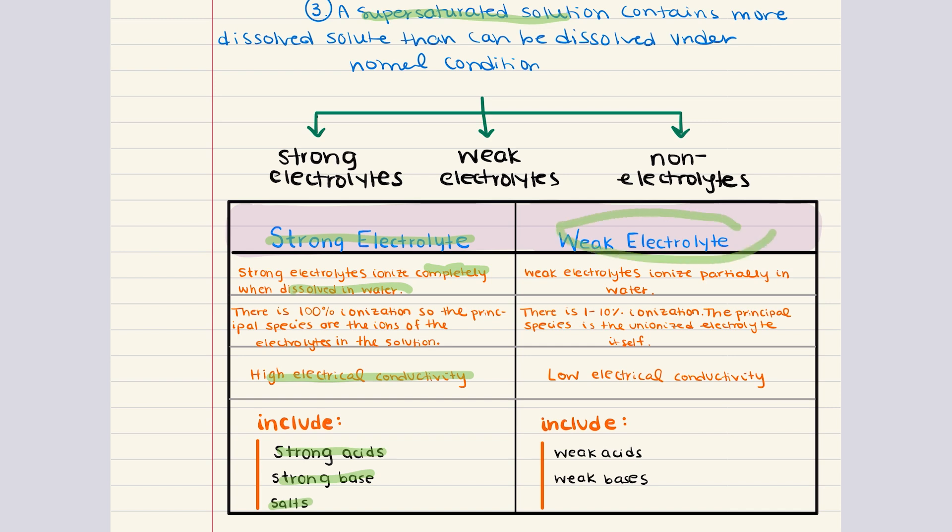Now, this is in contrast to weak electrolytes. Weak electrolytes only partially dissociate in water. This partial ionization means that the solution contains both ions and intact molecules. And so, that results in a lower electrical conductivity compared to strong electrolytes. Examples of weak electrolytes are weak acids, like acetic acid, and weak bases, like ammonia.